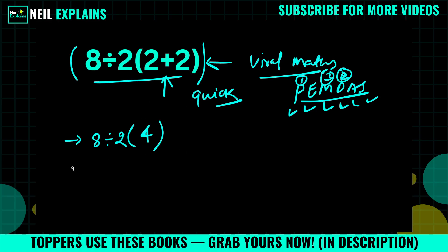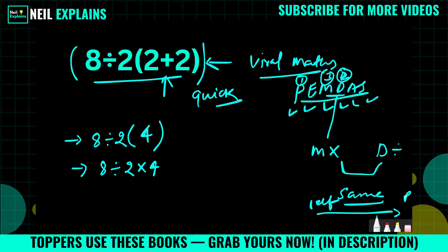So in the next step, 8 divided by 2, 2 plus 2, that is 4. If we simplify this expression, 2 into 4. According to PEMDAS, we consider multiplication and division with same priority, and in this case we will solve from left to right.